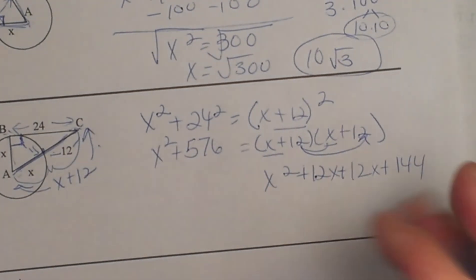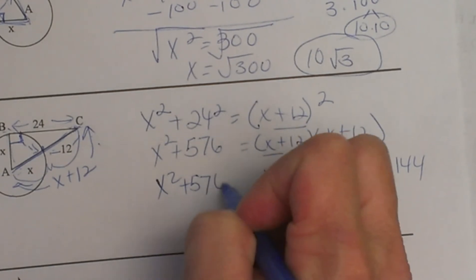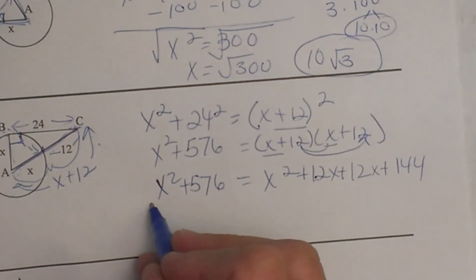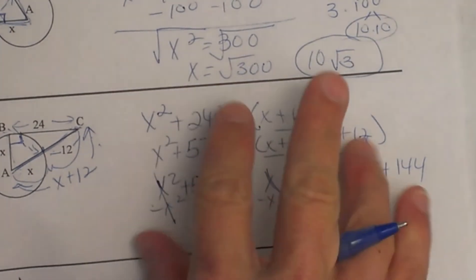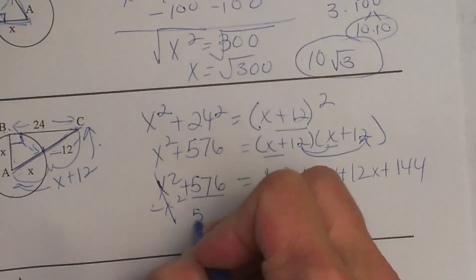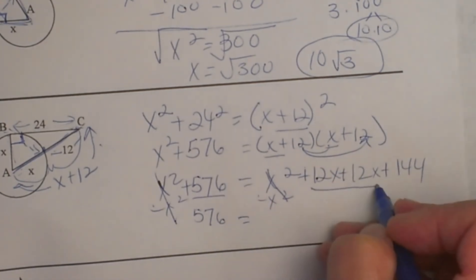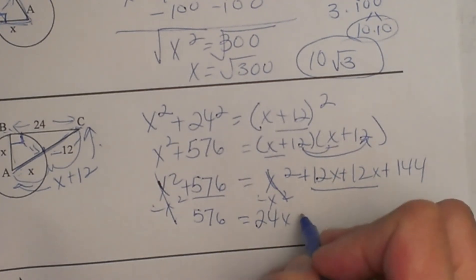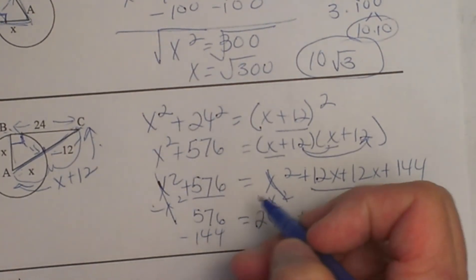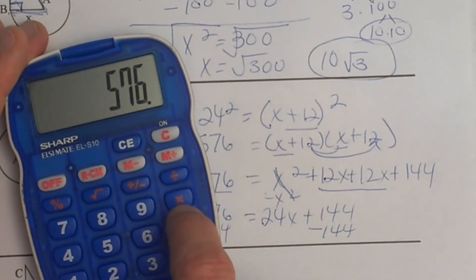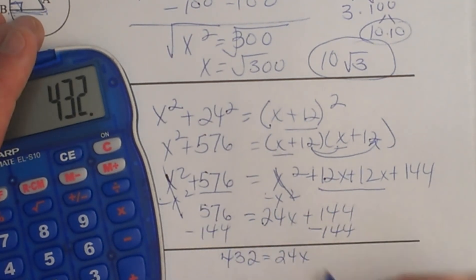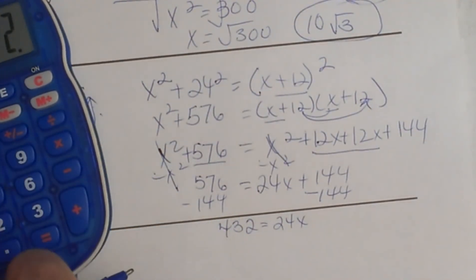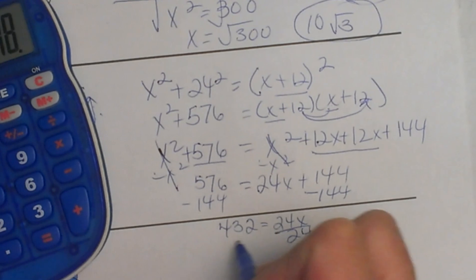Now we need to do some cleaning up to solve for x. If I subtract x squared from both sides, both x squared terms are gone, so the quadratic piece is out of the picture. That gives us 576 equals 12x plus 12x plus 144, which is 24x plus 144. Subtract 144 from both sides: 576 minus 144 leaves 432, which equals 24x. Divide both sides by 24 and x equals 18.